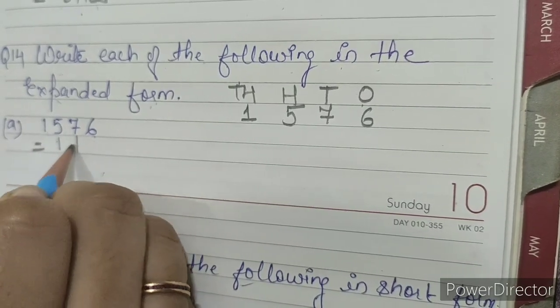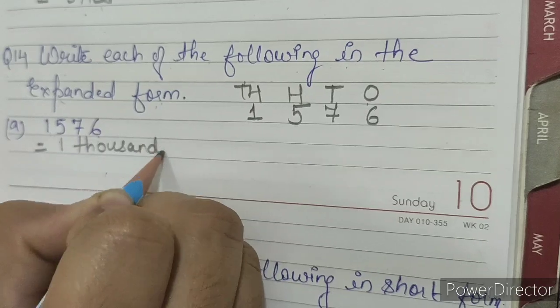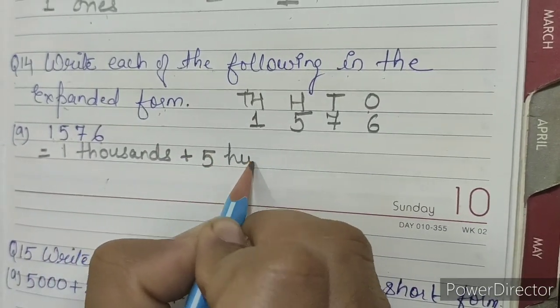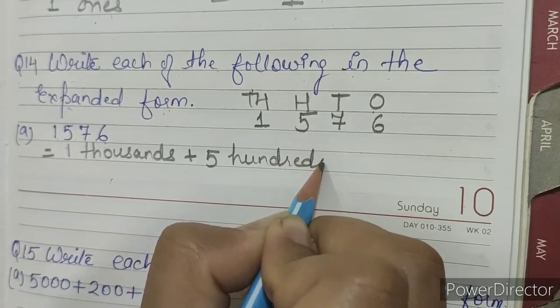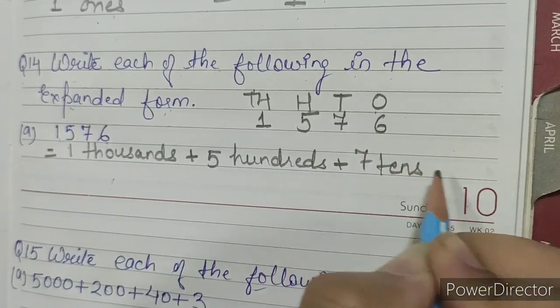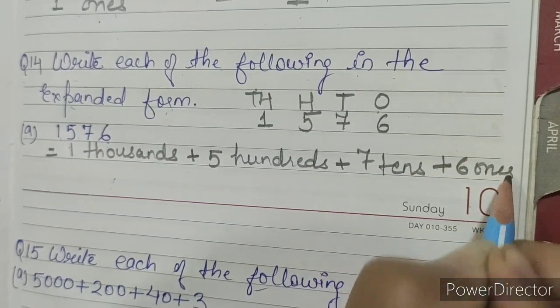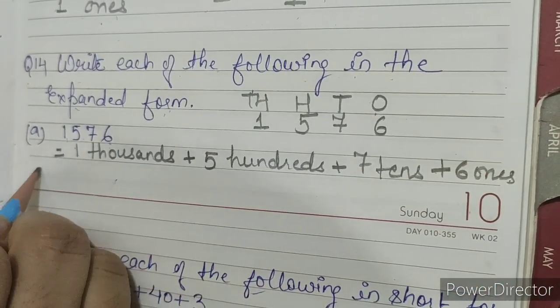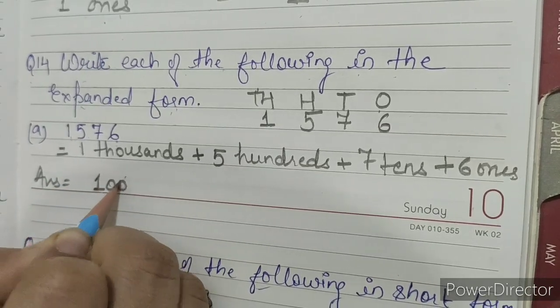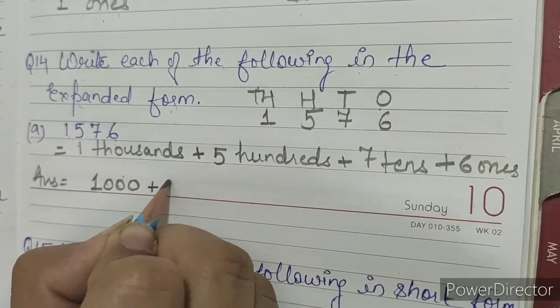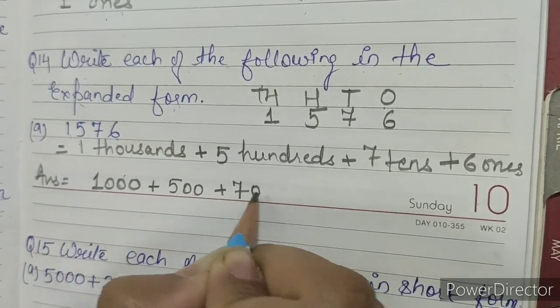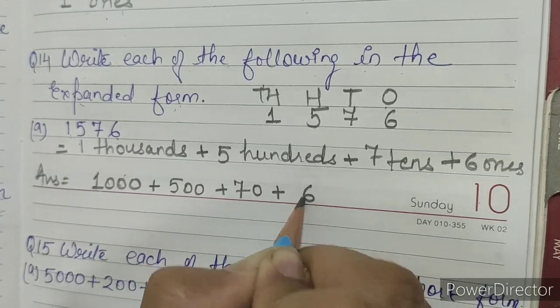One thousand plus five hundreds plus seven tens plus six ones. So the answer is 1000 + 500 + 70 + 6.